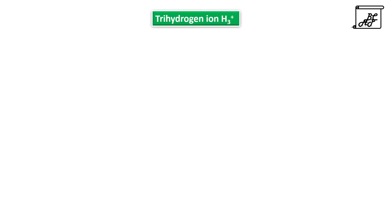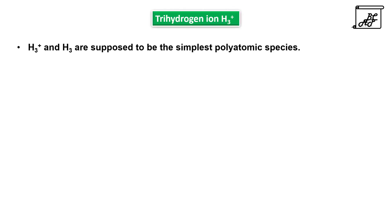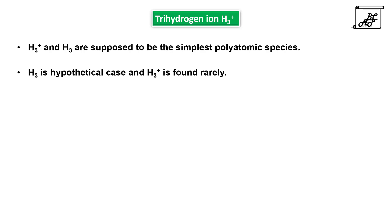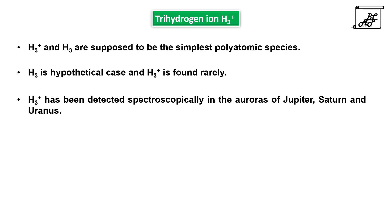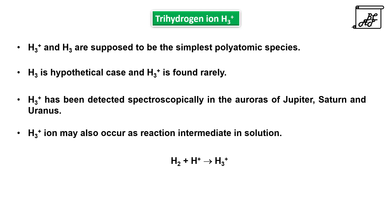Trihydrogen ion and trihydrogen are supposed to be the simplest polyatomic species, where trihydrogen is a hypothetical case and trihydrogen ion is found rarely. A trihydrogen ion has been detected spectroscopically in the auroras of Jupiter, Saturn and Uranus. This trihydrogen ion may also occur as a reaction intermediate in solution. It can be found by the combination of hydrogen molecule and hydrogen ion.